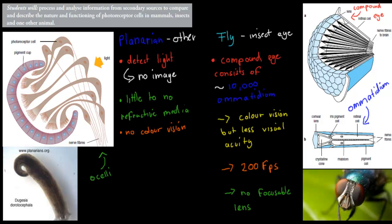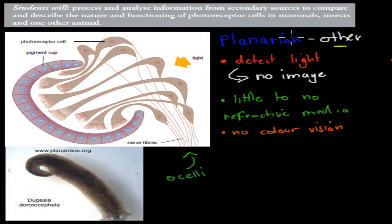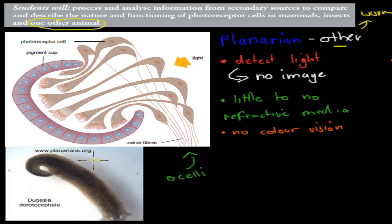So the planarian, which is the other animal I cover — because the dot point says talk about mammals, insects, and one other animal — is the planarian, which is more or less just a worm. You can see that from the picture right here. Now, its eye is very simple — one of the simplest eyes you can get — and it's called an ocelli. So the eyes would be right there, and it's called an ocelli.